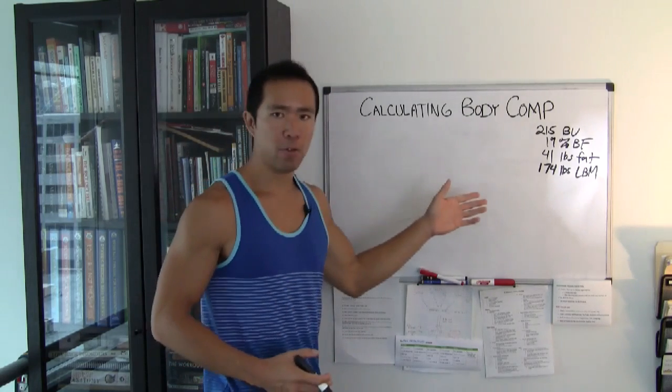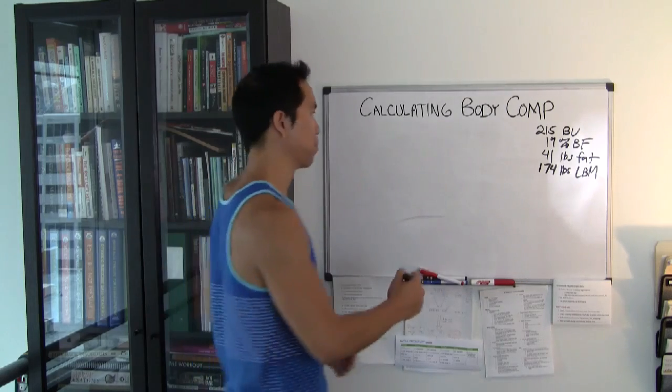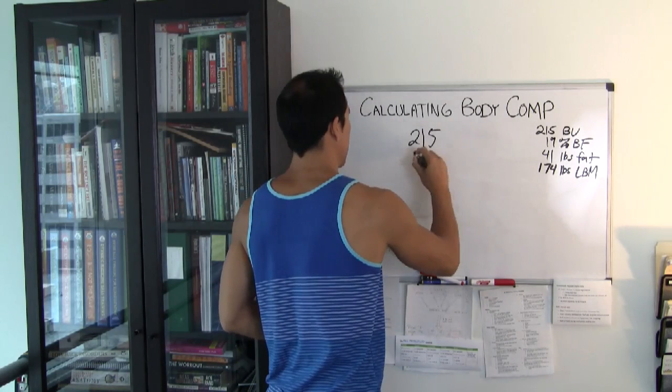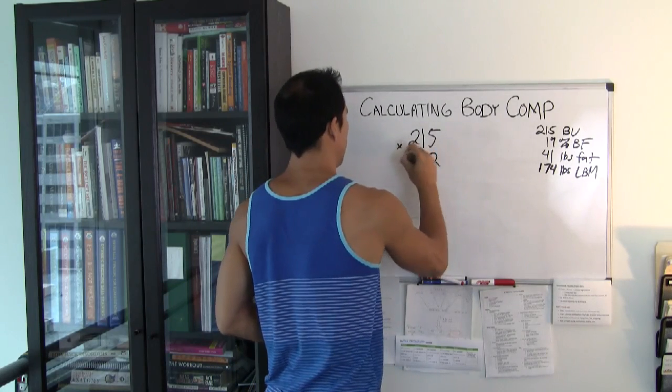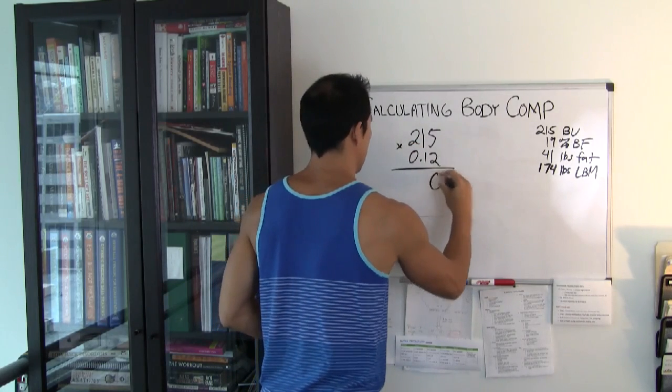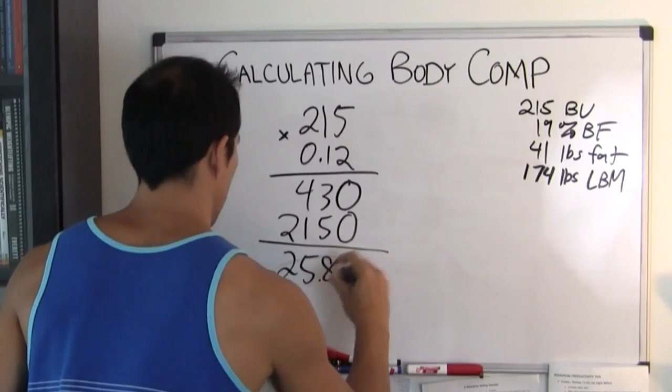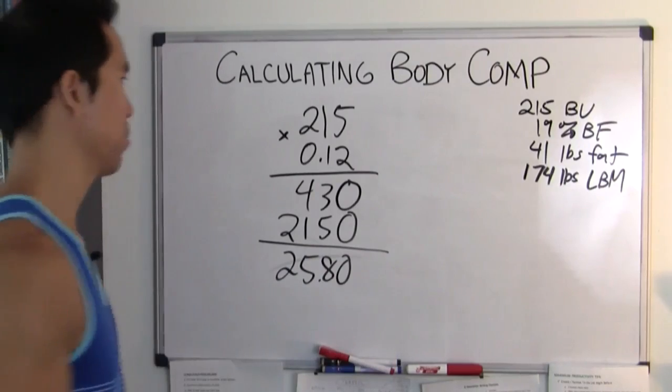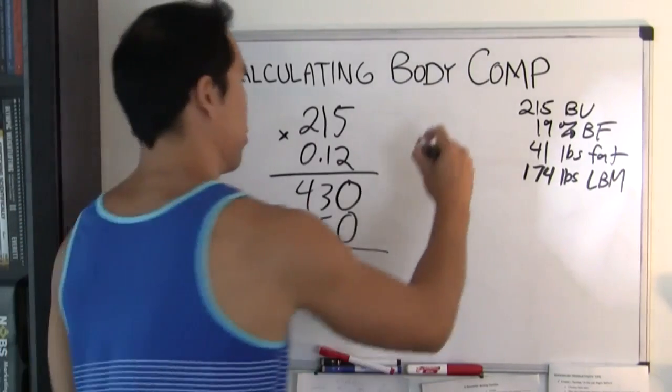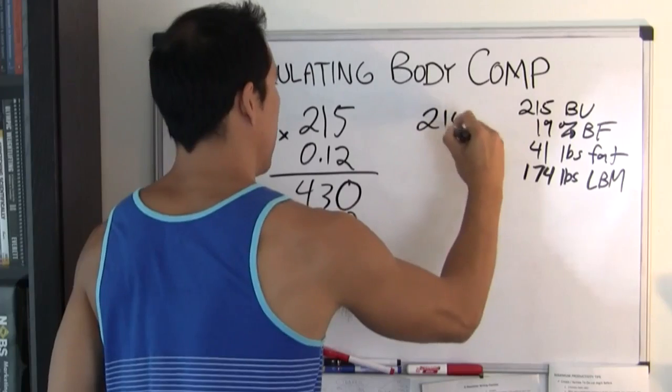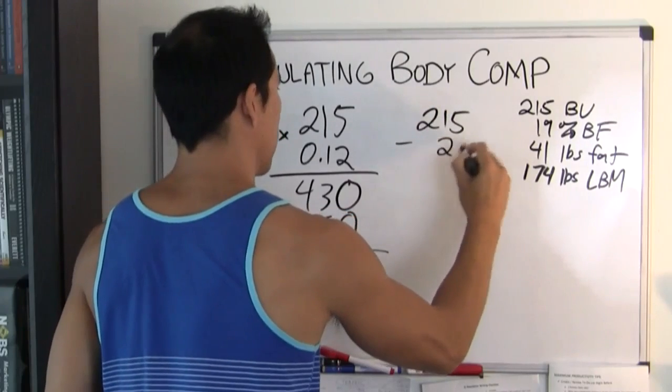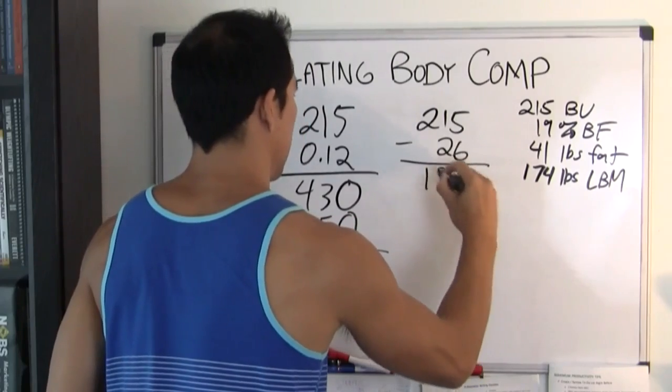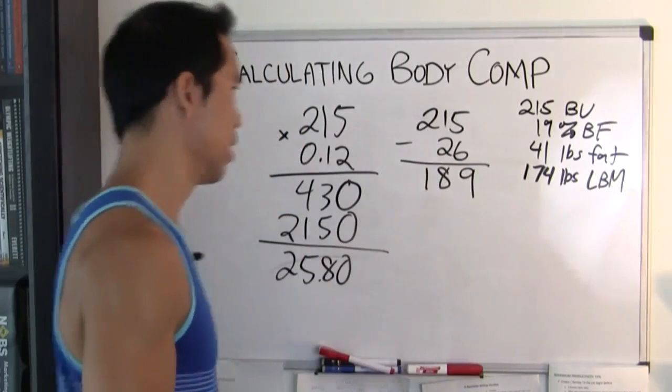Let's say we also want to keep you at 215 pounds of body weight. So let's calculate that, 215 times 12% body fat equals 25.8 pounds of fat mass. Now, 215, same thing we did before, minus the fat mass, so let's say 26, equals 189 pounds of lean mass.